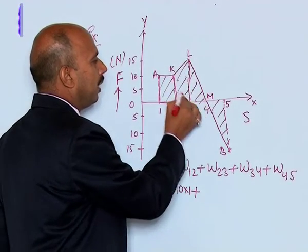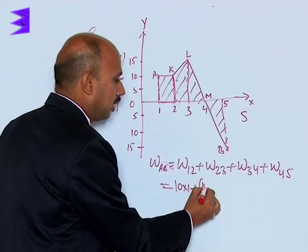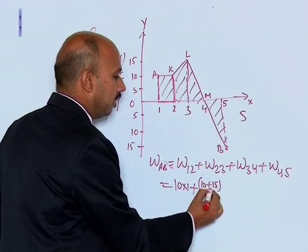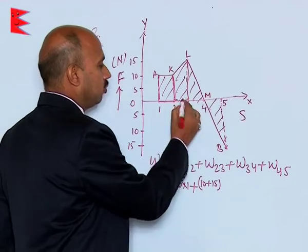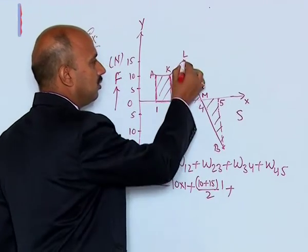Plus here 2 to 3, this is a trapezium, these are the two parallel sides 10 and 15. So we can write here 10 plus 15 into height, height is 1 divided by 2.